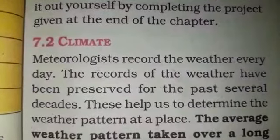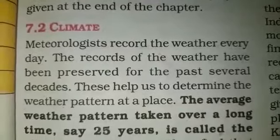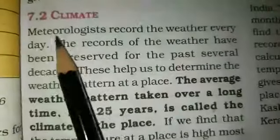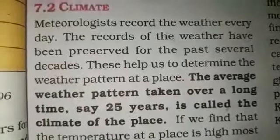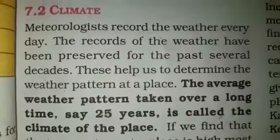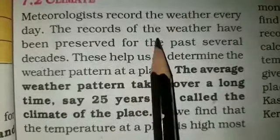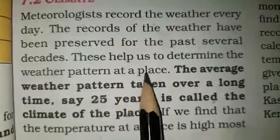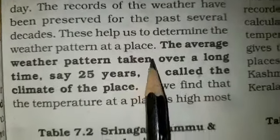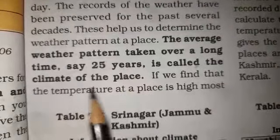After discussing the weather, we will continue with our next topic, i.e. Climate. Meteorologists record the weather every day, and the records of the weather have been preserved for the past several decades. These weather reports help us to determine the weather pattern at a place. The average weather pattern taken over a long time, say 25 years, is called the climate of the place.